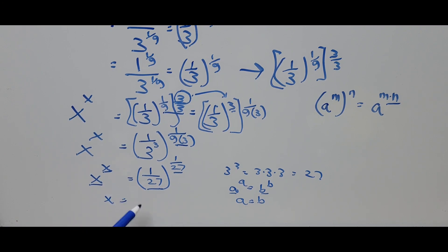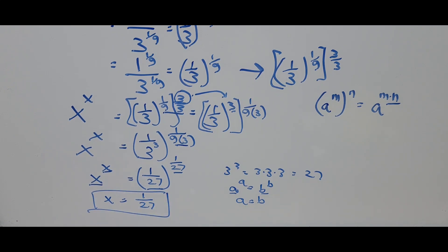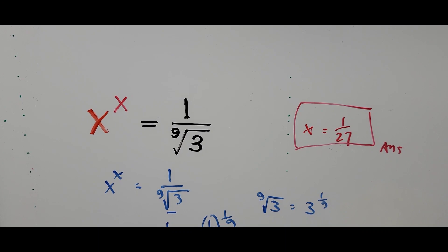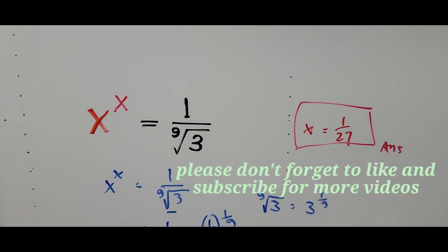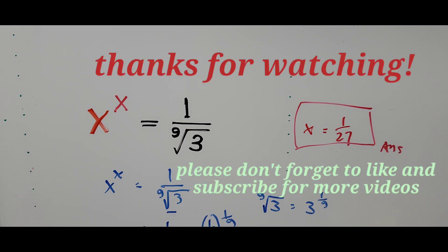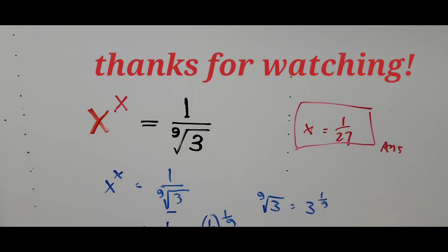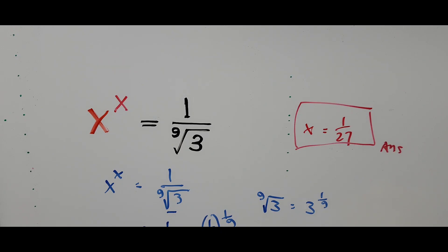Therefore, x equals 1 over 27 — that is the final answer. That's all for now. I hope you learned something and enjoyed this video. If you did, I would appreciate it if you can hit the like button and subscribe for more videos. Thank you for watching everyone, have a great day, bye — I will see you in the next video.